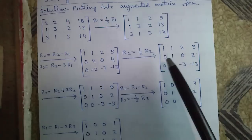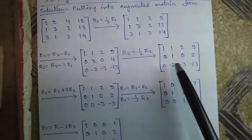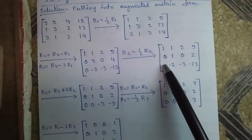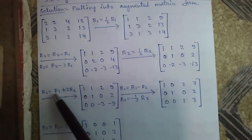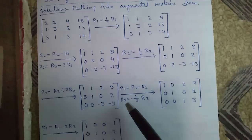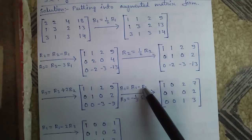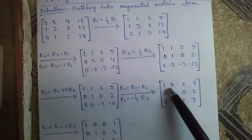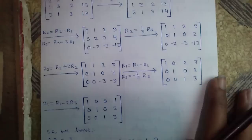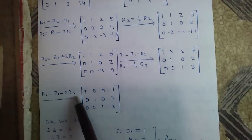Now we have to bring 0 here. If we multiply 2 times R1 from R3 we would get minus 2, which we don't want. So we will use R2 instead: R3 equals R3 plus 2R2, giving us a 0 here. Now we bring this to 1 using R3 equals minus 1 over R3. To bring a 0 here we use R1 equals R1 minus R2. Then to eliminate the remaining non-zero entries and get an identity matrix, we do R1 equals R1 minus 2R3.